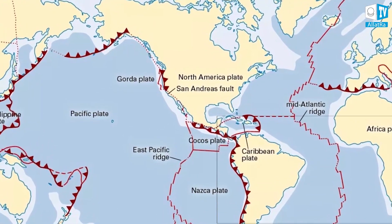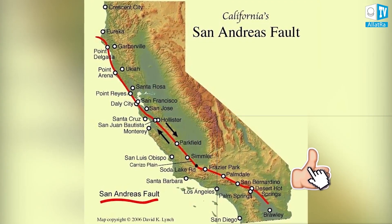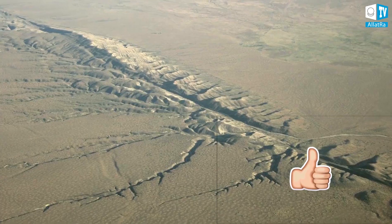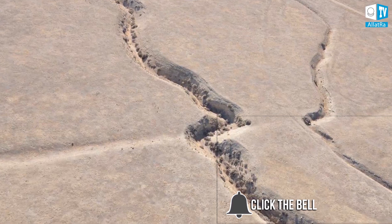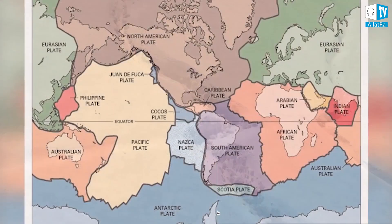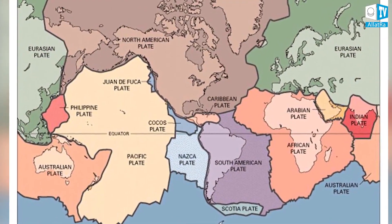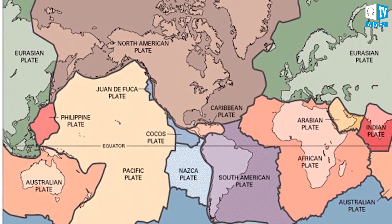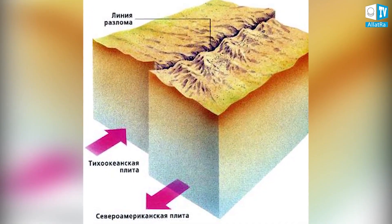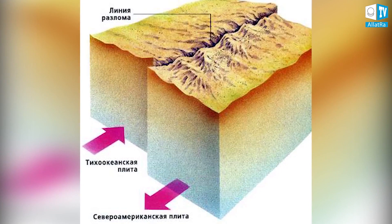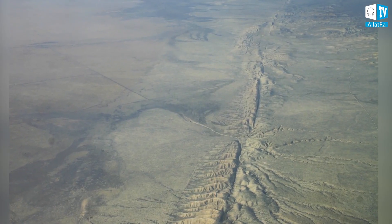The most striking example is the San Andreas Fault. Since the boundaries of the plates are not perfectly even, one can see protrusions and grooves on their surface, similar to teeth of a gear. When moving, the Pacific and North American tectonic plates cling to each other's teeth, increasing the tension. When the tension reaches a critical point, a breakdown occurs.